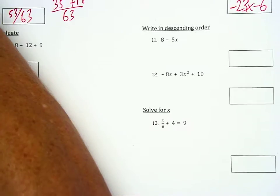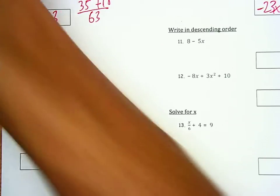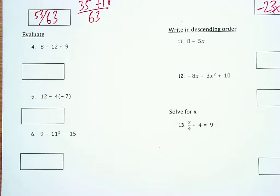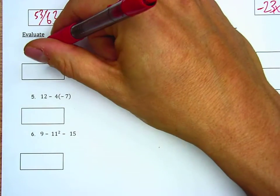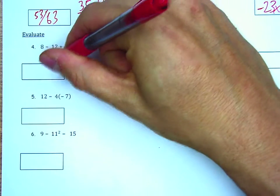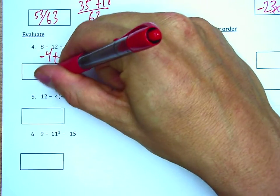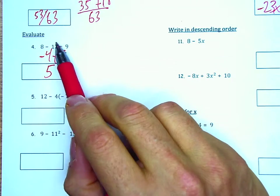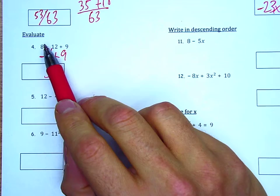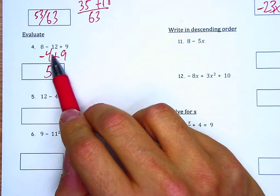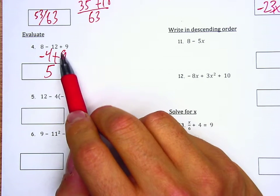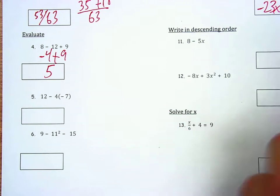We have some evaluate and some writing descending order. And I've got a solve for x question. So the evaluate question, we're going to take 8 minus 12. That's negative 4. And I'm going to add 9. That's positive 5. 8 minus 12, again the 12 is bigger than the 8, so this is why this is negative 4. The negative 4 plus 9, the 9 is bigger than the 4, so this is why it's positive 5.